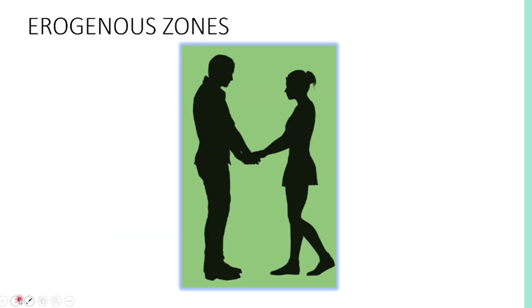Now let's proceed to erogenous zones. It refers to parts of the body that are primarily receptive and increase sexual arousal when touched in a sexual manner. For example, the mouth, the breast, the genitals, and the anus. However, erogenous zones may vary from one person to another. Some people may desire and enjoy being touched in certain areas more than others, like the neck, thighs, abdomen, and feet.